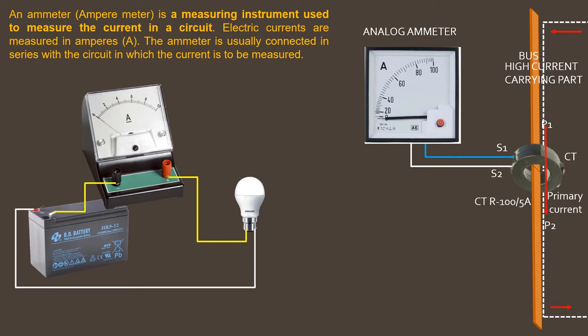The CT has a specific ratio. The CT ratio here is 100 by 5 ampere, which means if primary side current is 100 ampere, then secondary side current will be 5 ampere.